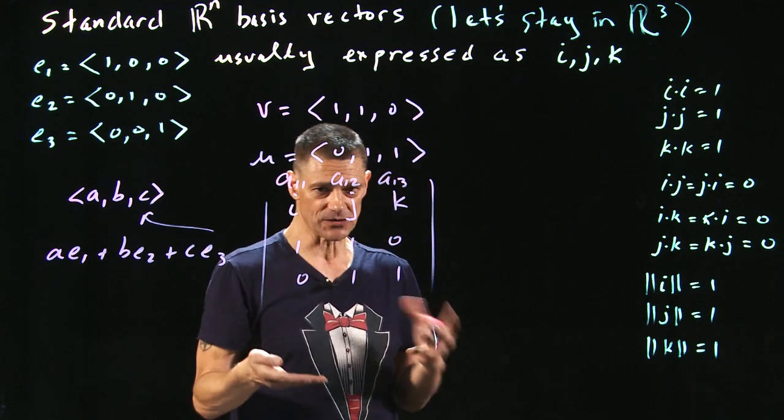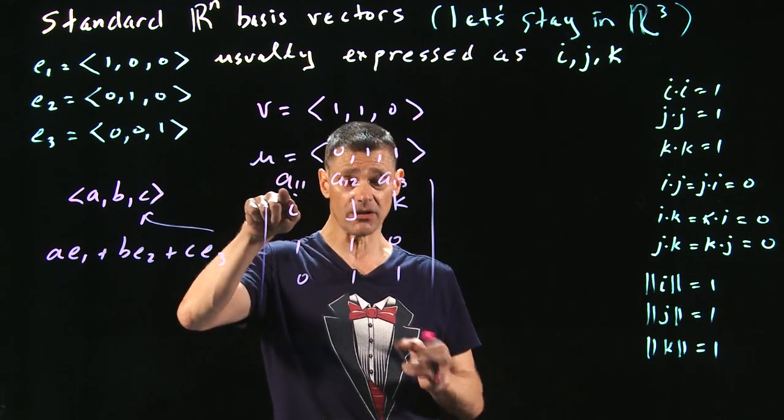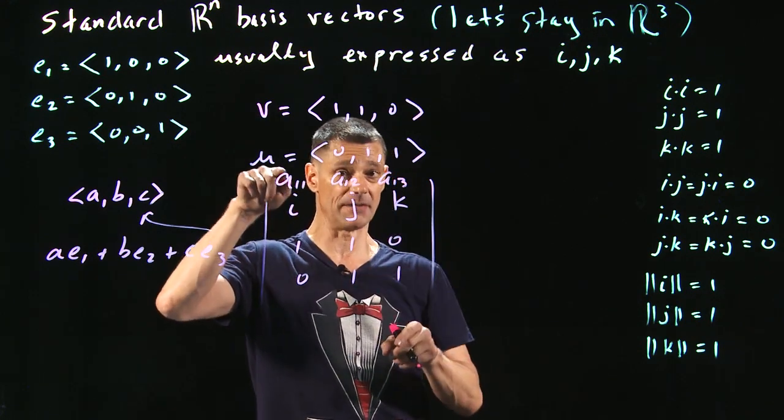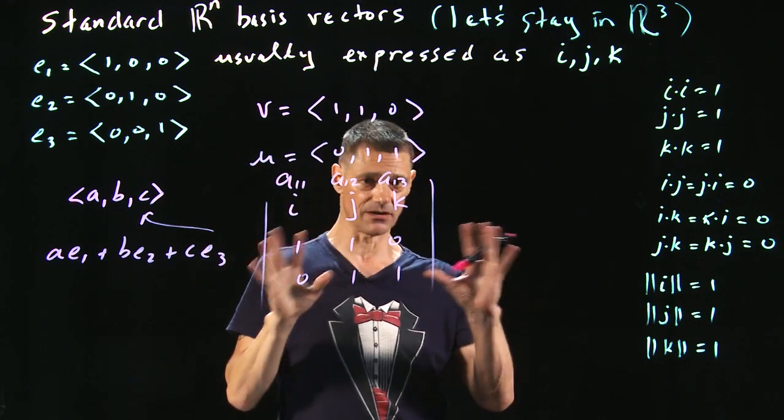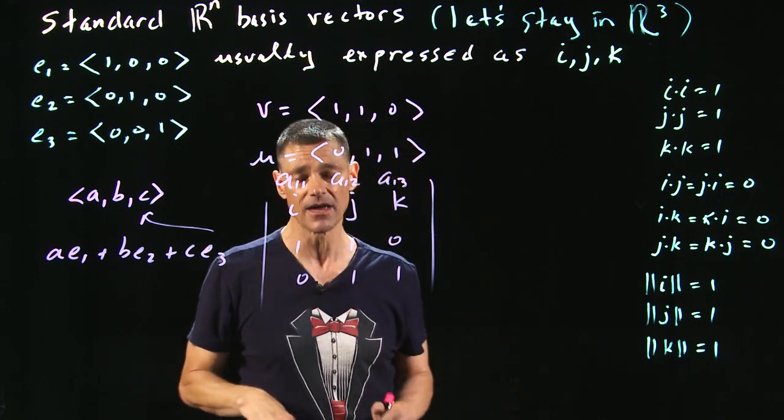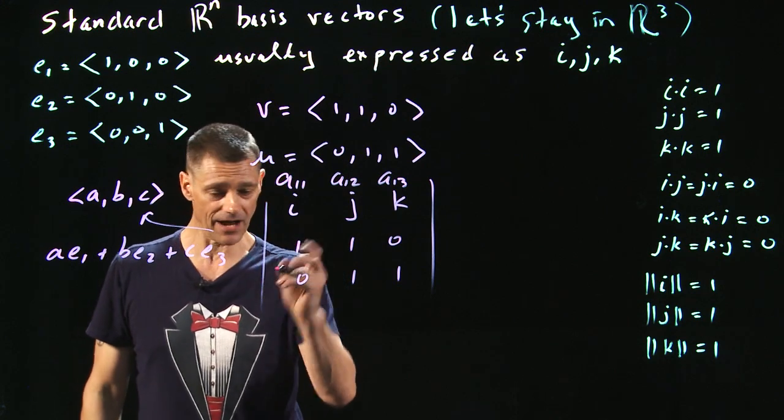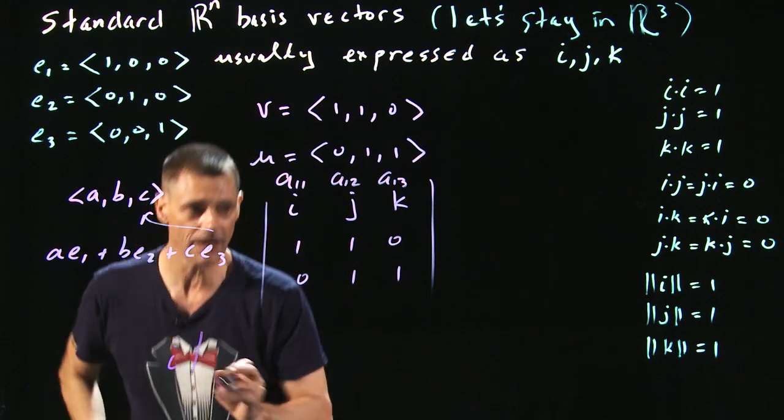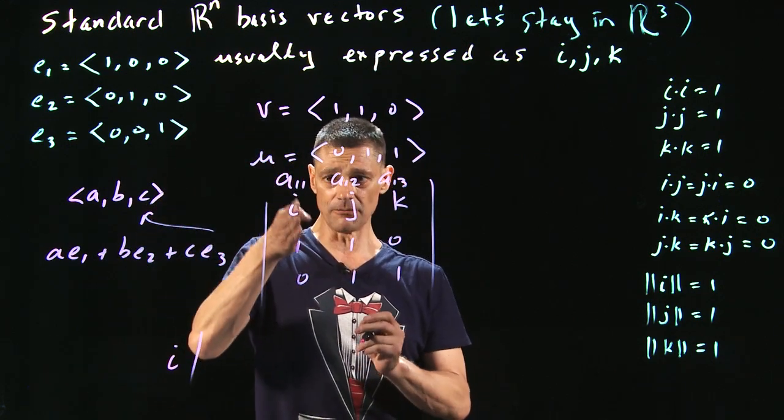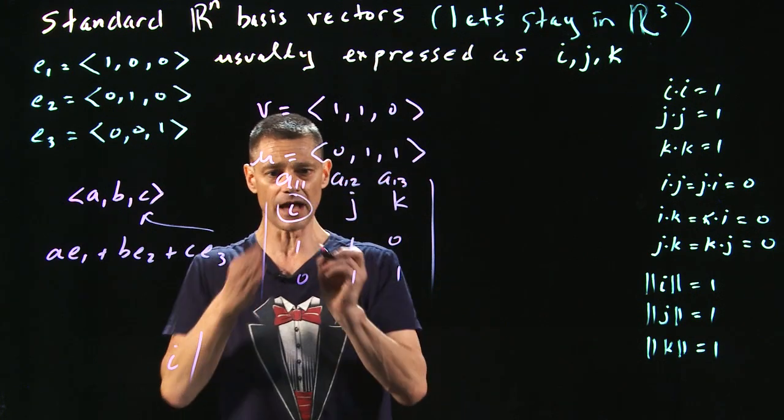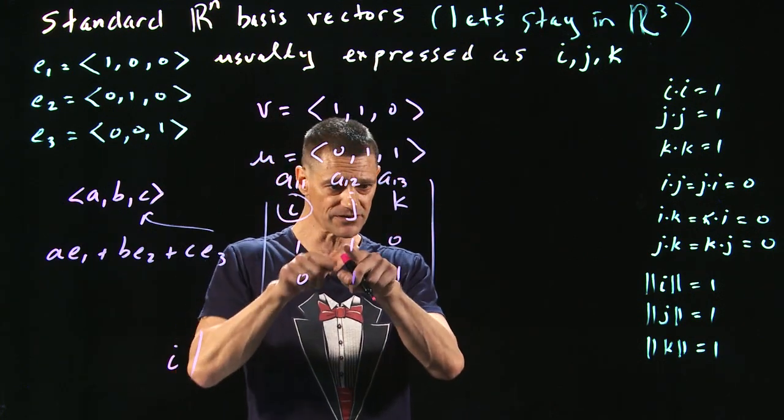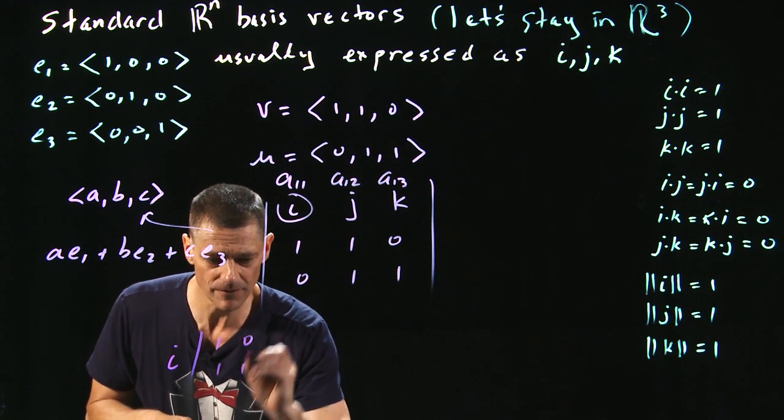So this expansion out, this is going to be i times the minor of i. And the minor of i, you take everything out of this row in this column, the minor is [1,0; 1,1], 0, 1, 1. Then it's going to be minus j, because remember, (-1)^(1+2) is (-1)³, it's negative.